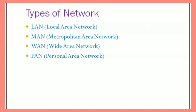The types of the network are LAN, MAN, WAN, and PAN. LAN is the Local Area Network, MAN is the Metropolitan Area Network, WAN is the Wide Area Network, and PAN is the Personal Area Network. These network types are based on their geographical area. LAN covers the smallest area, MAN covers an area larger than LAN, and WAN covers the largest area of all.